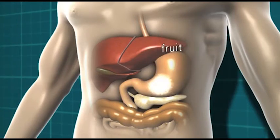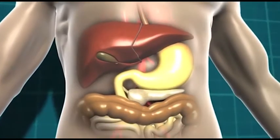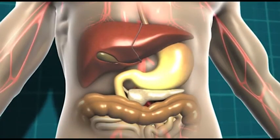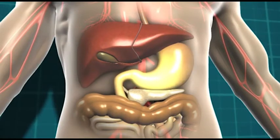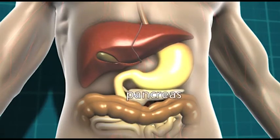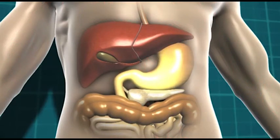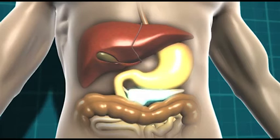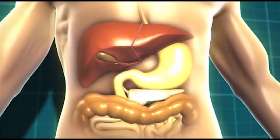This glucose then moves into the bloodstream and the body detects that the blood glucose level is rising. In response to that, the pancreas, which is a little gland that sits just underneath the stomach, starts to release a hormone called insulin, and it's insulin that helps our body get the energy from the food we eat.